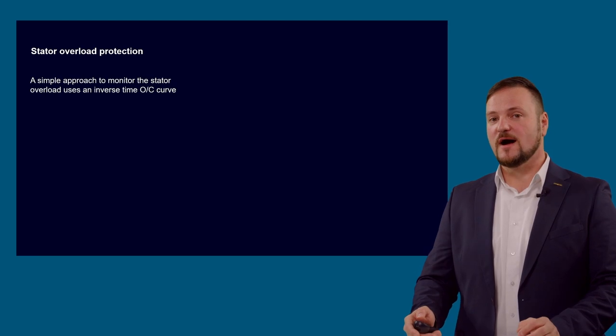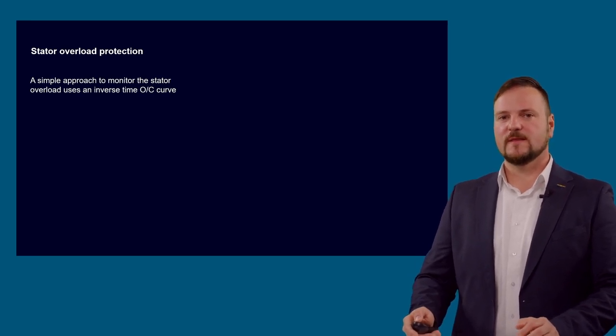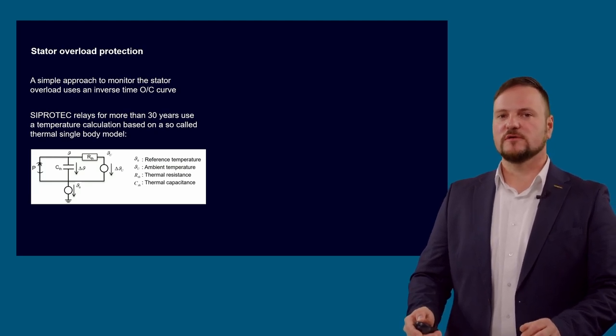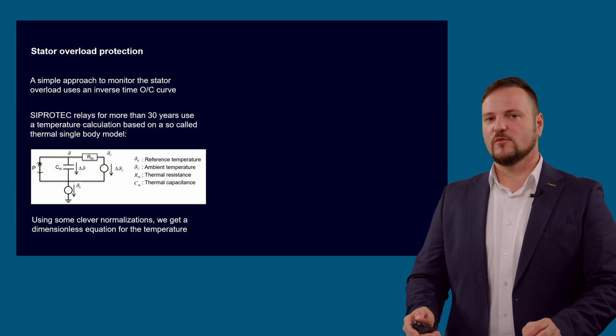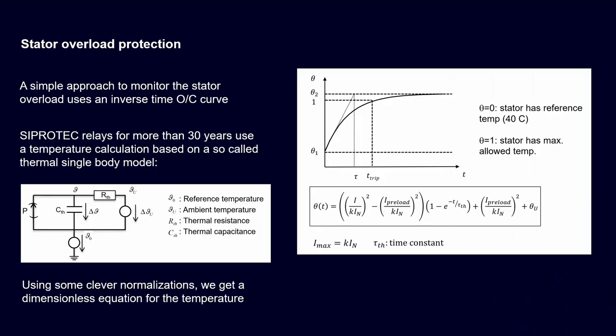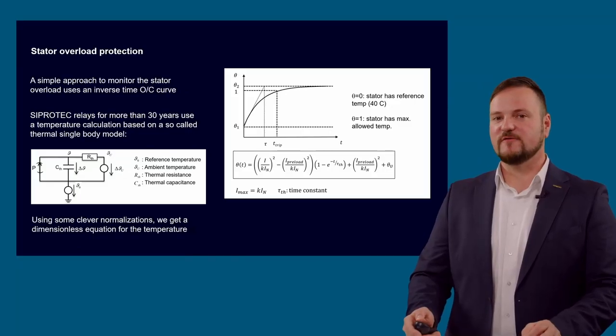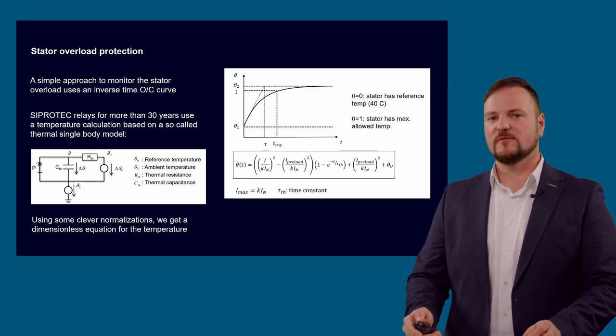The stator can be overloaded. The stator can be overloaded if the motor current is too high for a longer time. This happens, for example, when the motor voltage is below the nominal voltage, or for a longer time the load is too high. A simple approach to monitor the stator overload is used in an inverse over time current curve. The SIPROTEC relays for more than 30 years use a temperature calculation based on the so-called thermal single-body model, as shown below, considering the power source, the capacitance which heats up by one part of this power, and the thermal resistance which dissipates the other part of this power. Motor manufacturers do not deliver this parameter, but a clever simplification of this model can be used to monitor permanently the stator temperature and use the data which is available by the motor manufacturers.